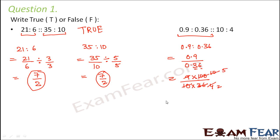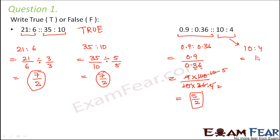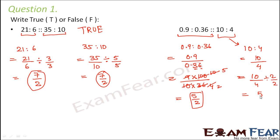Cancelling gives 5 by 2. This is the same as finding the HCF of 90 and 36, which is 18, and also yields 5 by 2. Now for 10 is to 4: written as 10 divided by 4, the HCF is 2, so dividing gives 5 by 2. Both ratios equal 5 by 2, therefore this is also true.